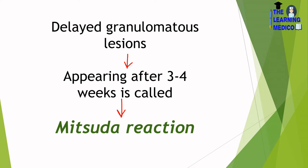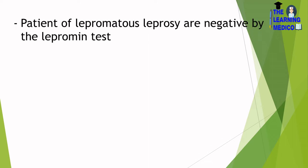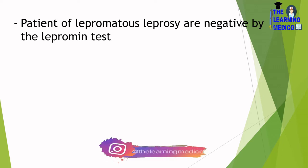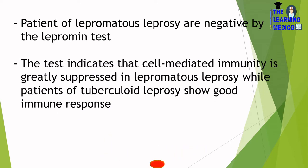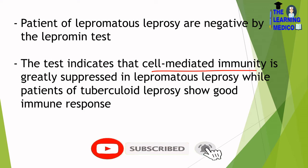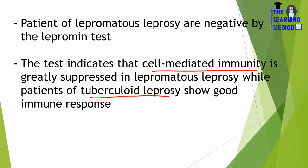Patients of lepromatous leprosy are negative by the Lepromine test. This indicates that cell-mediated immunity is greatly suppressed in lepromatous leprosy, while patients of tubercular leprosy show a positive immune response. There are two types of leprosy: lepromatous leprosy and tubercular leprosy.